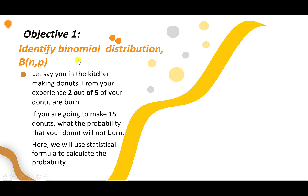Objective 1: Identify Binomial Distribution. Let's say you are in the kitchen making doughnuts. From your experience, 2 out of 5 of your doughnuts are burned. If you are going to make 15 doughnuts, what's the probability that your doughnuts will not burn? Here, we can use a statistical formula to calculate the probability.